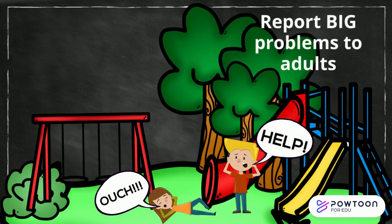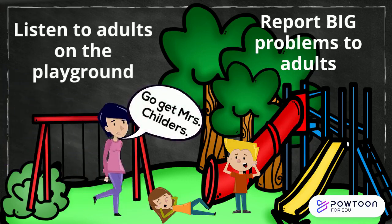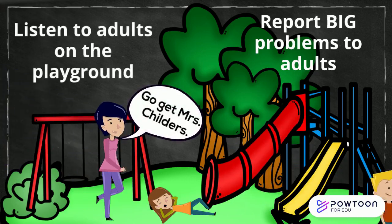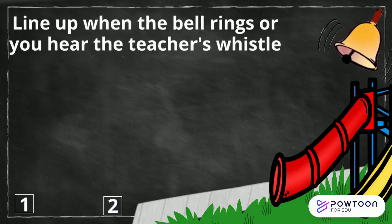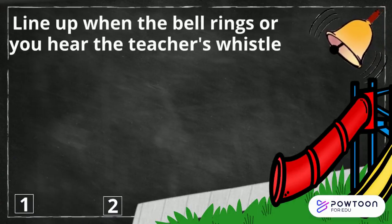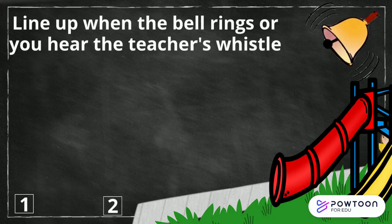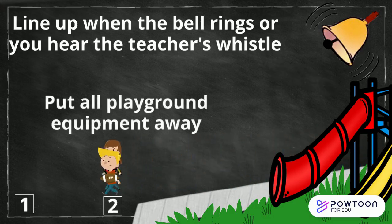Report big problems to adults. Listen to adults on the playground. Line up when the bell rings or you hear the teacher's whistle. Put all playground equipment away.